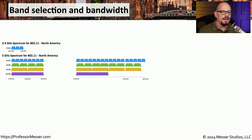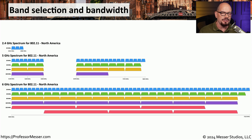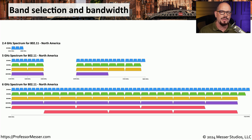that may not be enough to prevent interference. Instead, you might want to use 5 gigahertz, where there are many other frequencies available, giving you a better chance of finding one that doesn't have as much interference. And now the 6 gigahertz band is also available, with many more frequencies available to help avoid conflicts and interference in the future.